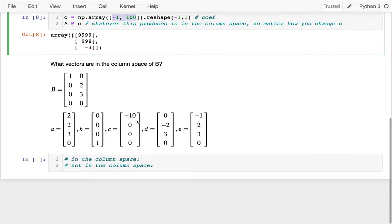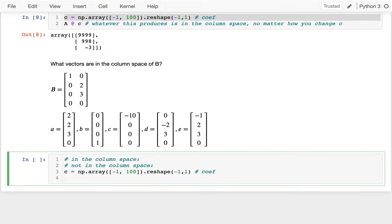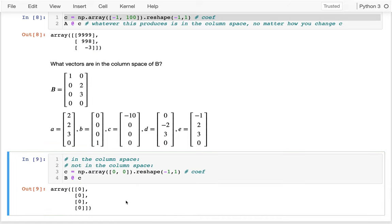Down here I have a more complicated example. I have a different matrix B, and then I want to know, of these different vectors down here, which ones are in the column space? I'm going to try to poke around and see if I can figure it out. Just like before, I'm going to take this C, these coefficients, and maybe I'll just start with 0, 0. By the way, I can always have my coefficients be 0, which means that the 0 vector is part of every single column space, regardless of what matrix I'm dealing with.